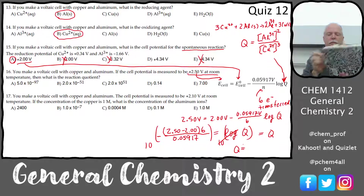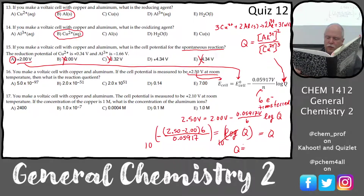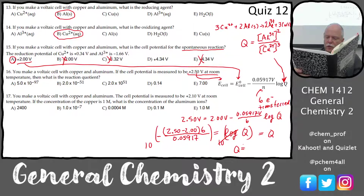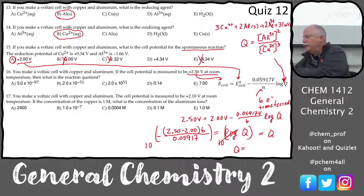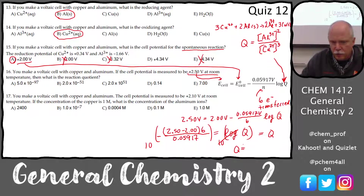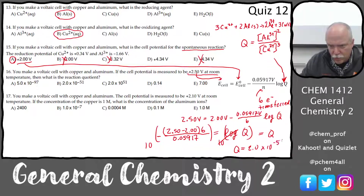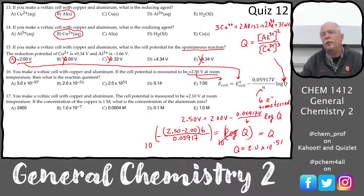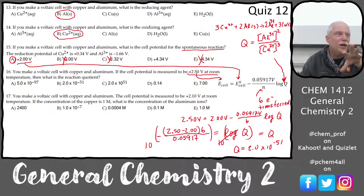The result is 2 × 10⁻⁵¹. That's a really, really small number, which means we have very little aluminum in product — we have almost all reactants and no products.